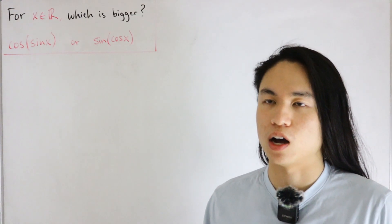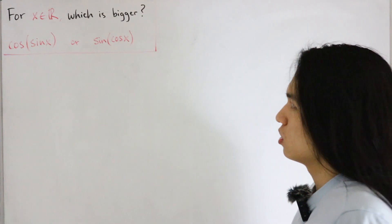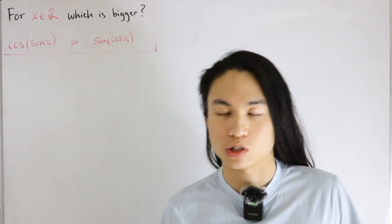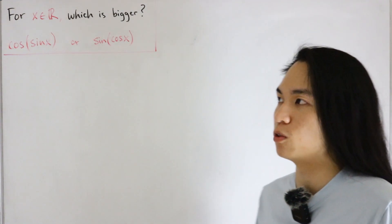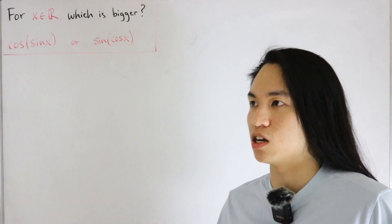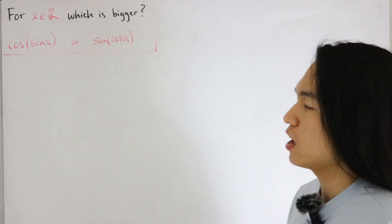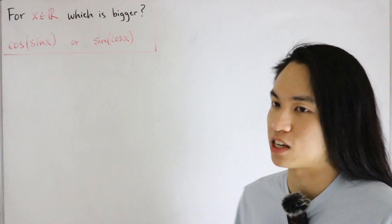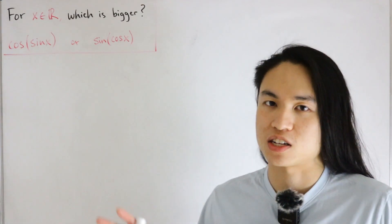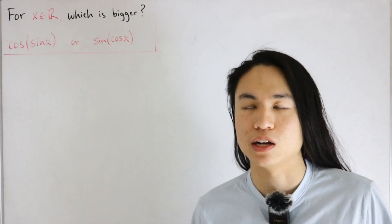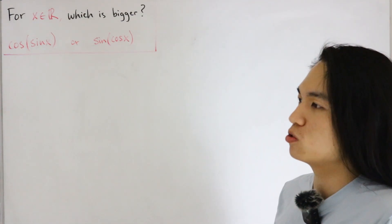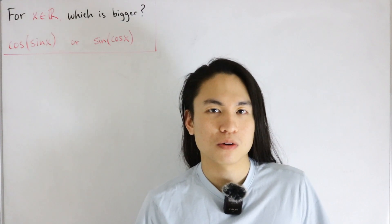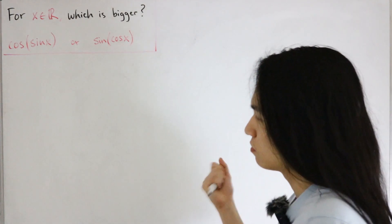We're going to exclude the calculator advantage. For this function comparison involving trig functions — cosine and sine — we'll be utilizing properties of those trig functions, things like sum and difference of angles and the phase shift. Then we'll use the fact that the sine function is bounded to assign a compound inequality, and from there deduce which of these two functions is bigger. So let's jump right in.